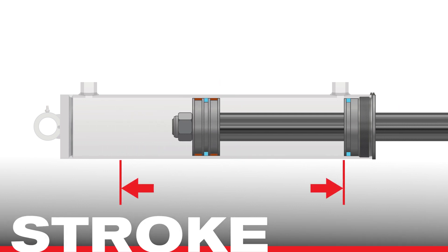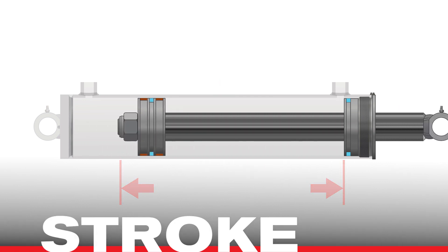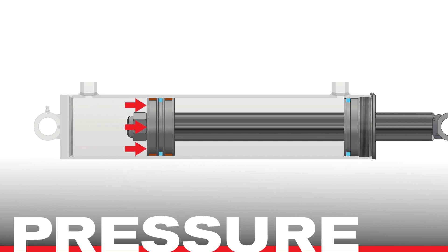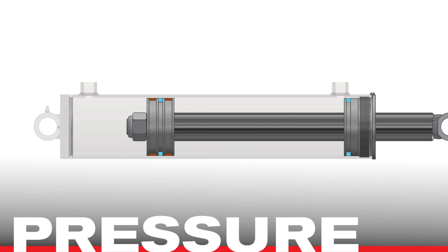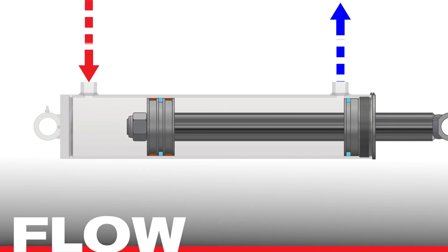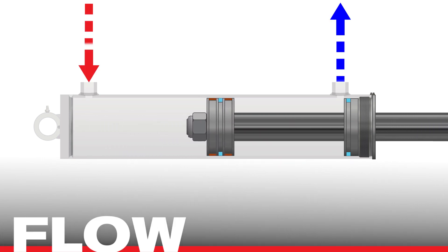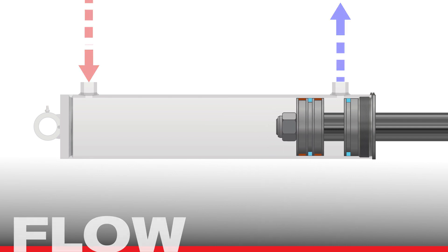Stroke is the distance the piston travels inside the cylinder. Pressure is the hydraulic pressure, measured in pounds per square inch, that is available from the system to the cylinder. The flow, measured by gallons per minute, is the volume of fluid per unit time available from the system.